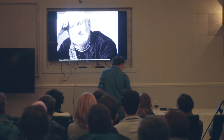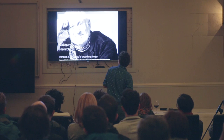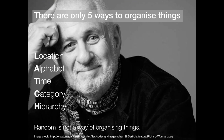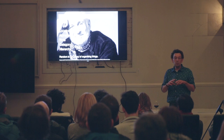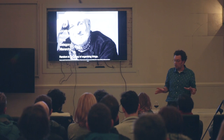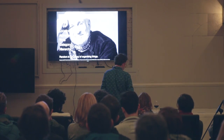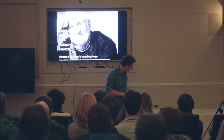So let's go through the five ways to sort things. They are: location, alphabet, time, category, and hierarchy - called LATCH, because of the first letters of those words. Random is not a way of organising things, regardless of whoever tells you that.